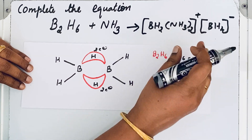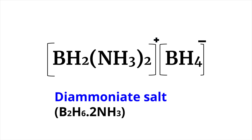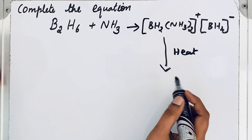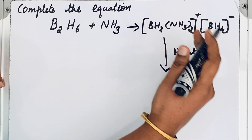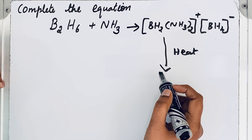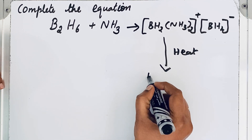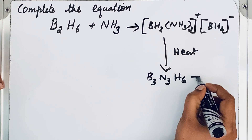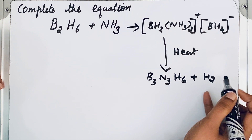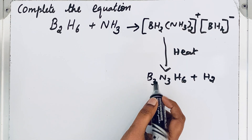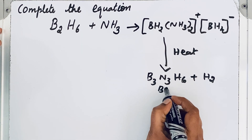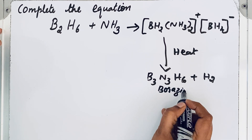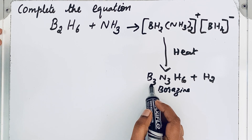This diammoniate salt is an intermediate only. When we heat this salt, it will decompose — the terminal hydrogen atoms are removed and we get B₃N₃H₆ plus hydrogen gas released.